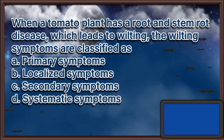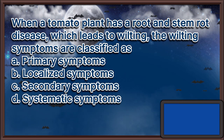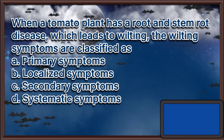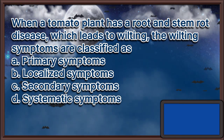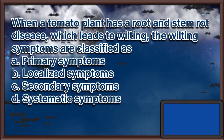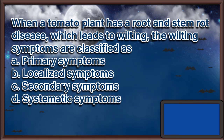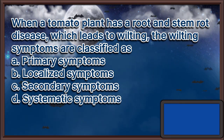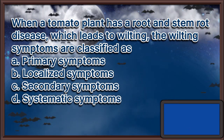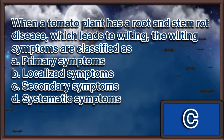When a tomato plant has a root and stem rot disease which leads to wilting, the wilting symptoms are classified as. A. Primary symptoms. B. Localized symptoms. C. Secondary symptoms. D. Systemic symptoms. The answer is letter C.